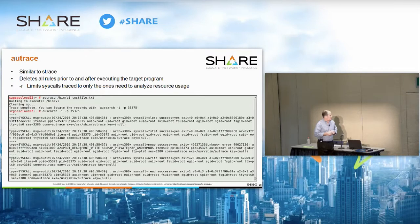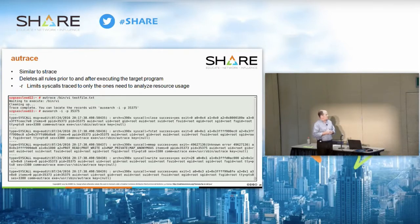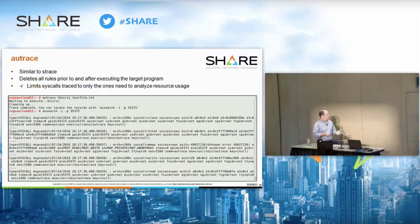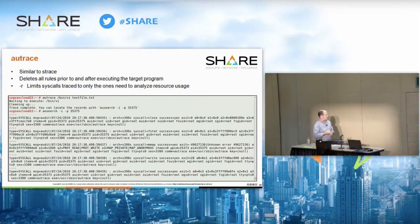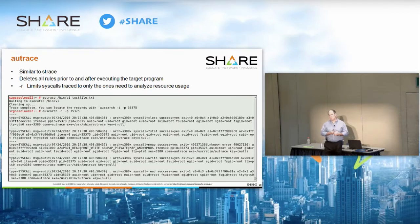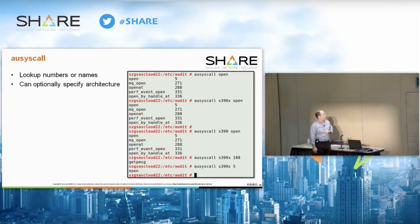Here's an example of autrace. As mentioned, it deletes all rules prior to and after executing the target program — in this case, vi. After running the trace, you run 'ausearch -p' with the process ID to get all the records, all the syscalls that were produced from editing the test file.